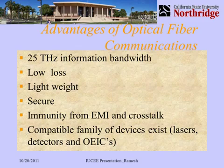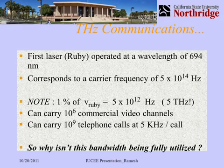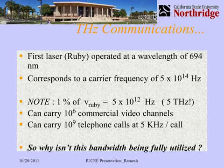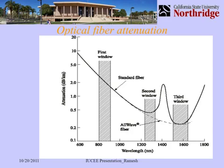The first ruby laser operated at a wavelength of 694 nanometers, which translates to a frequency of 5 times 10 to the 14th hertz. Even taking just 1 percent of this frequency gives about 5 terahertz, which can carry roughly a million commercial video channels or a billion telephone calls at 5 kilohertz per call. The question is why isn't this bandwidth fully utilized? To answer that, we need to look at how fiber optics has evolved.